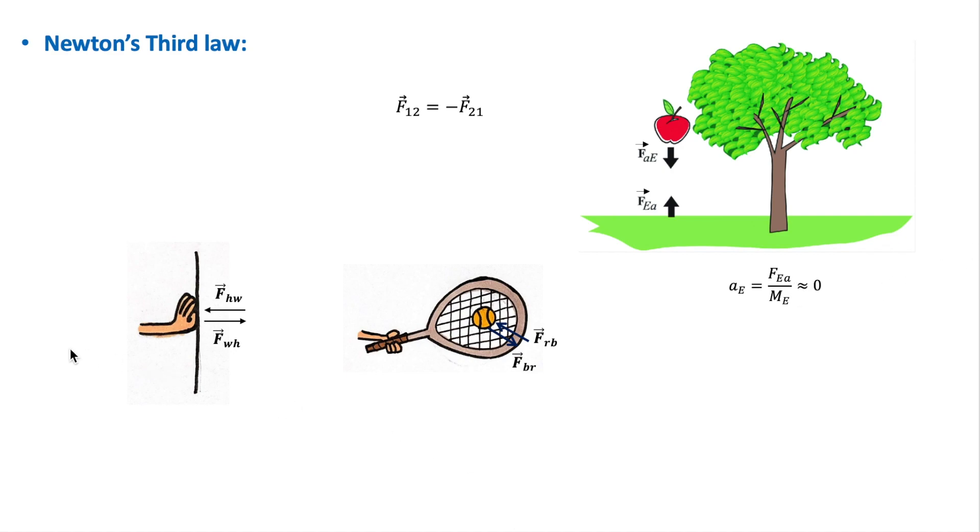And as another example, consider pushing a wall, then the wall will push back on your hand. And these two forces are also an action-reaction pair. Also another example is a racket hitting a ball. So these also two forces between the ball and the racket are an action-reaction pair.